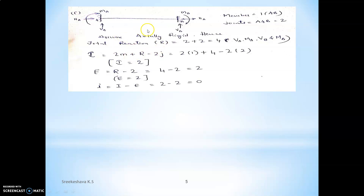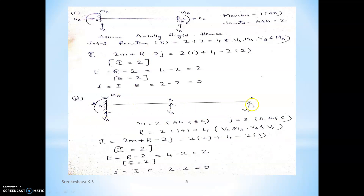Generally in theory of structures we assume the axially rigid concept. For the third problem — fixed beam — assuming axially rigid, we ignore Ha and Hb. There is one member AB, two joints (A and B). At joint A ignoring Ha: two reactions; at joint B ignoring Hb: two reactions — total four reactions. Substituting in the equations, total indeterminacy = 2 and external indeterminacy r - 2 = 2. The fixed beam (axially rigid) is externally indeterminate of order 2 and internally determinate.